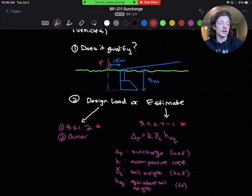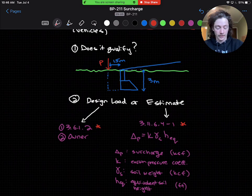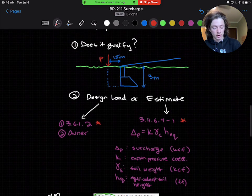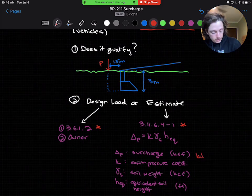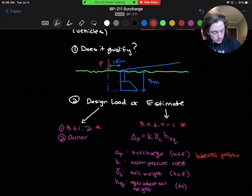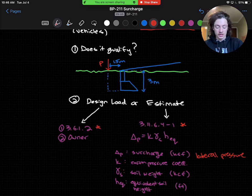Following the equation, the terms are simply our surcharge—or really that's our lateral pressure—calculated by our earth pressure coefficient, the unit weight of the soil, and the equivalent soil height.